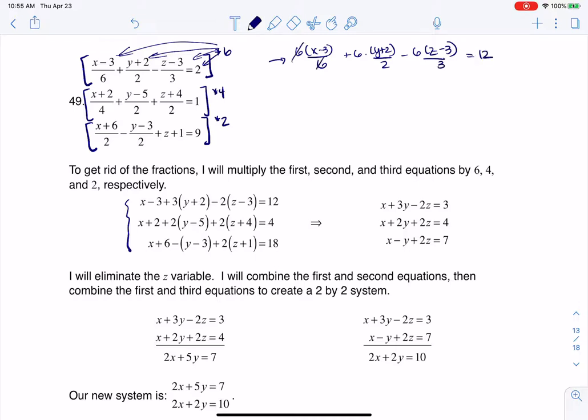So the 6's would cancel. That would leave me with just x minus 3. 2 divided by 6 is 3, so that would be plus 3 times y plus 2. 3 goes into 6 2 times, so this would be minus 2 times z minus 3, equaling 12. And if you take a look at this equation here, it is quite literally this equation here.